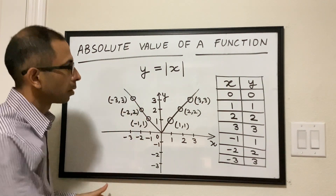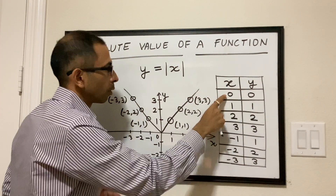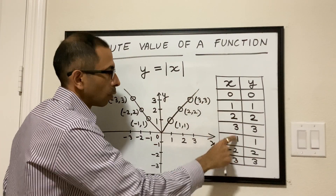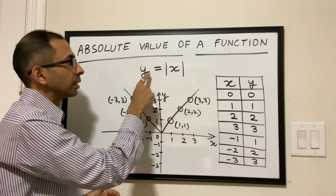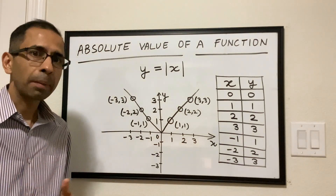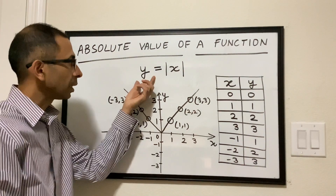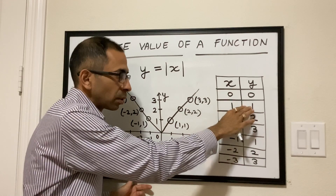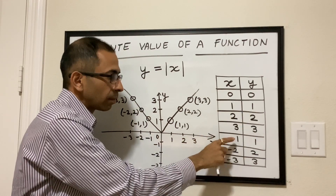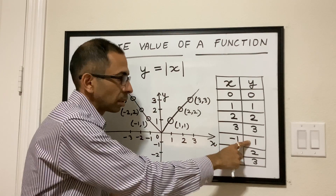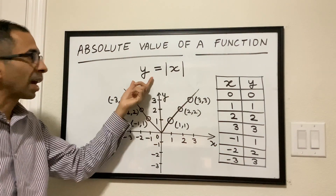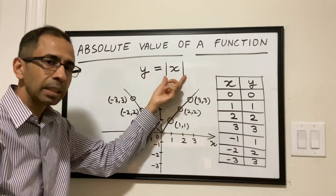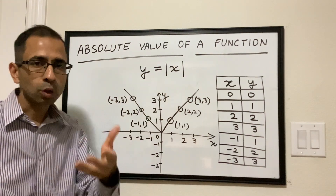Let's do the same thing here. We created a simple table of x and y. When x is 0, y is 0. When x is 1, y is 1. When x is negative 1, y is again 1. Going back to the definition of the absolute value function, all it does is just removes the negative sign. When x is positive it keeps the same value; when x is negative it removes the negative sign keeping the same value. So for x is minus 1, y will be 1; when x is negative 2, y is 2; when x is negative 3, y is 3, and so on.